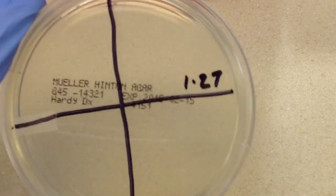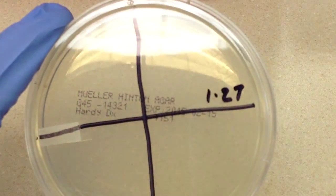In this video we are going to set up an X and V plate for Haemophilus identification. So the first thing that we'll do here, well the first thing that I've done is I've taken a Mueller Hinton plate.